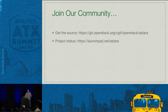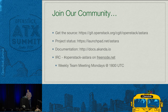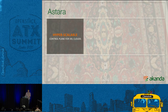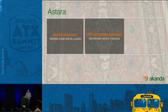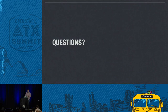Project status is on Launchpad Astara. Documentation is at docs.akanda.io, which redirects to Astara's ReadTheDocs. Our weekly meeting is on Freenode Mondays at 1800. The last takeaways: we designed Astara to be a hyper-scalable control plane, very pluggable, to provide layer three and above services, all open source.